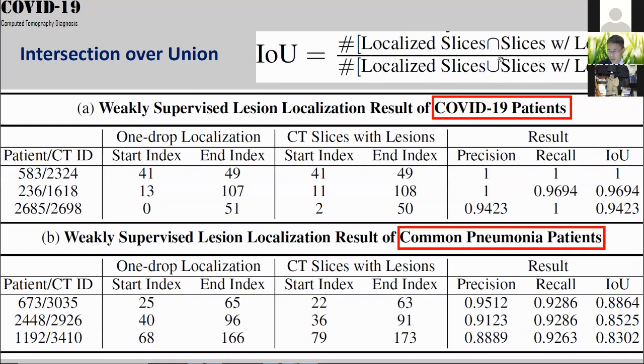For common pneumonia, we can recommend, for example, slices 25 through 65, while the ground truth is slices 22 through 63 — very close to each other.